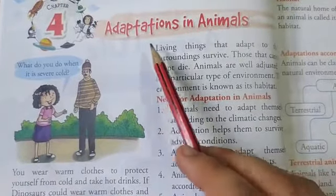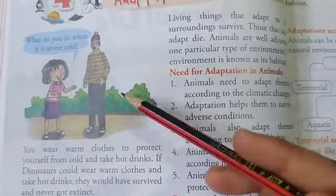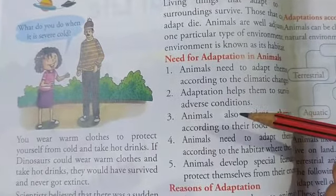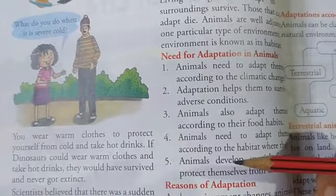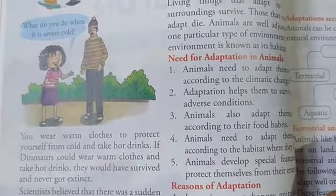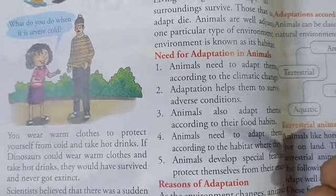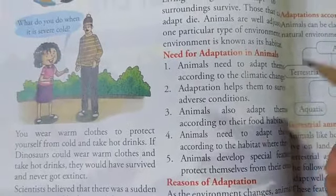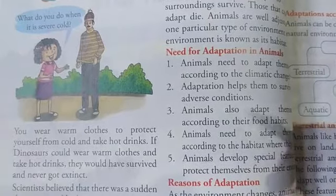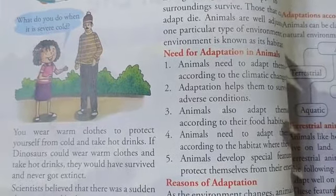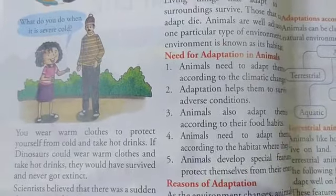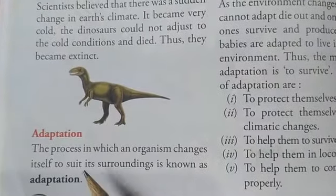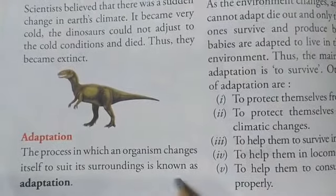So, what do we mean by the word adaptation? For example, when there are winters, we wear warm clothes and we take hot drinks to protect ourselves from cold. And in summers, we wear cotton clothes and take a lot of cold drinks to protect ourselves from heat. So, this means that we adapt ourselves according to the weather. Similarly, if we talk about the animals, animals also do the same things. They adapt themselves or they change themselves according to the climate, according to the weather changes and according to their food habits. So, the process in which an organism or an animal changes itself to suit its conditions or surroundings is known as adaptation.